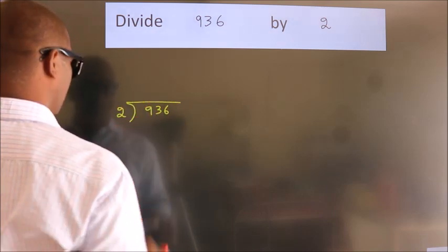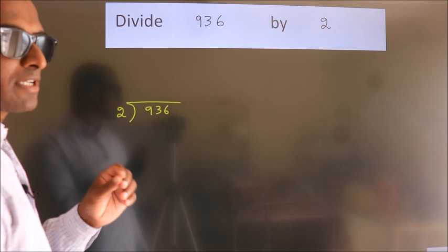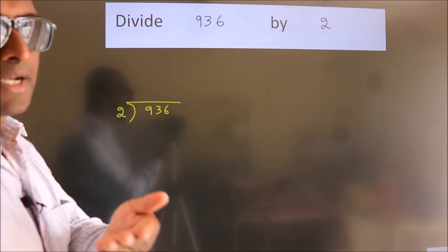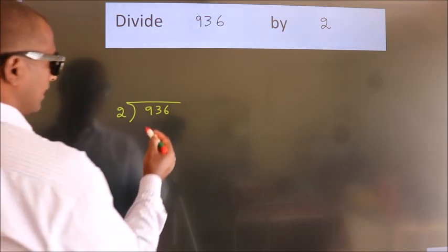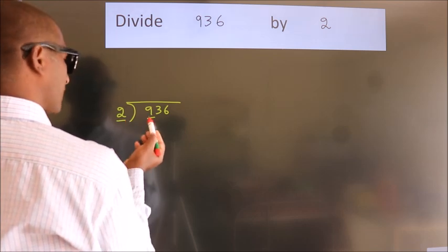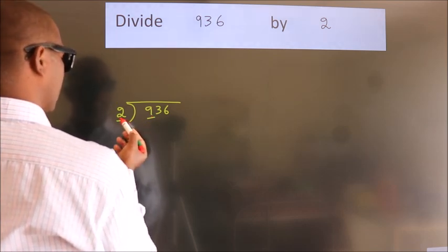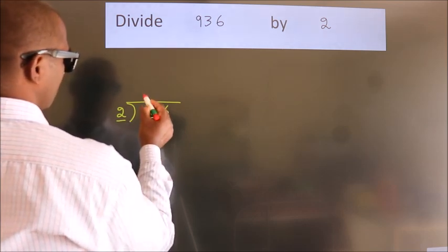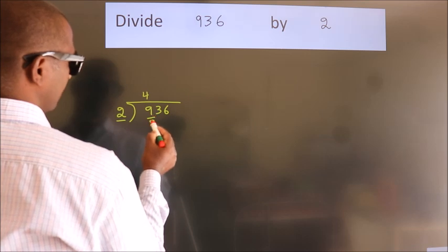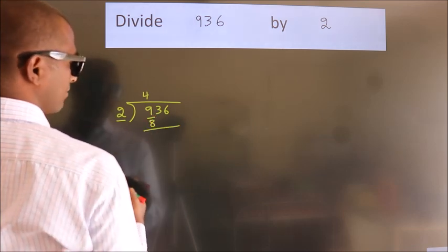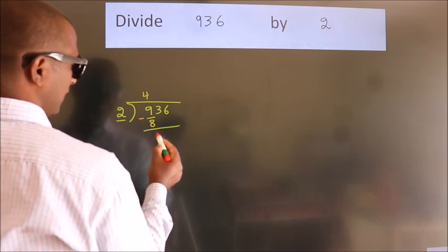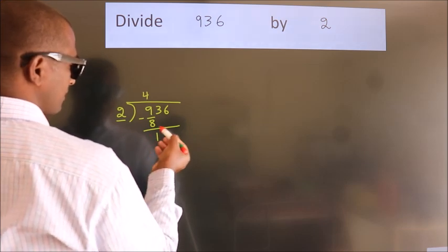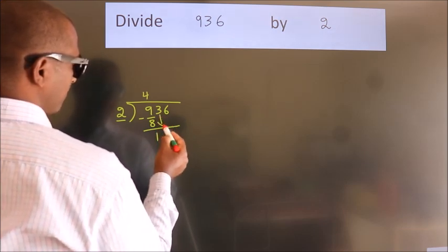2 here. This is your step 1. Next, here we have 9. A number close to 9 in the 2 table is 2 times 4 equals 8. Now we should subtract. We get 1.